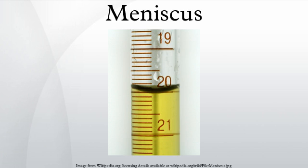A convex meniscus occurs when the particles in the liquid have a stronger attraction to each other than to the material of the container. Convex menisci occur, for example, between mercury and glass in barometers and thermometers.